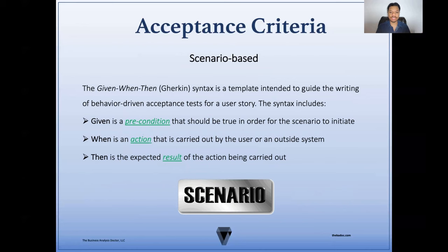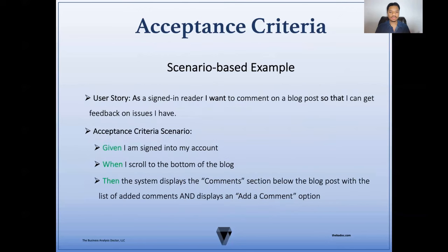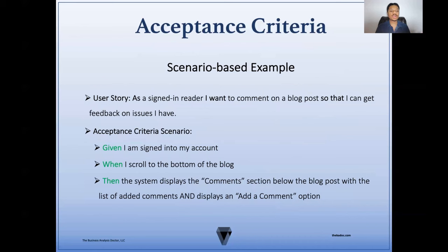Now let's look at the scenario-based acceptance criteria. The given-when-then format, or formally the Gherkin syntax, is a template intended to guide the writing of behavior-driven acceptance tests for the user story. The syntax includes a given, when, and then. The given is a precondition that should be true in order for the scenario to initiate. The when is an action carried out by the user or an outside system. And the then is the expected result of the action being carried out. For example, for the user story 'as a signed-in reader, I want to comment on a blog post so that I can get feedback on issues I have,' the acceptance criteria might be: given I am signed into my account, when I scroll to the bottom of the blog, then the system displays the comment section below the blog post with the list of added comments and displays an 'add a comment' option.